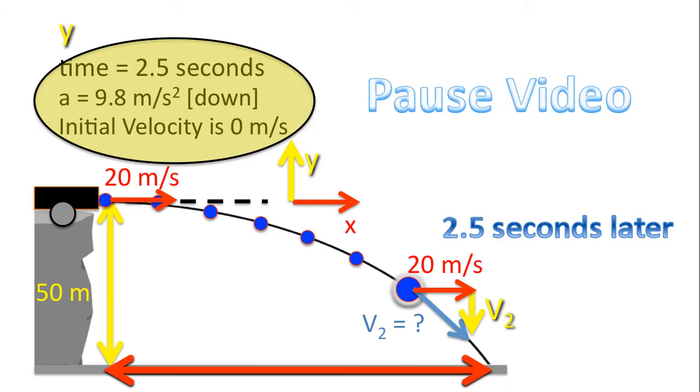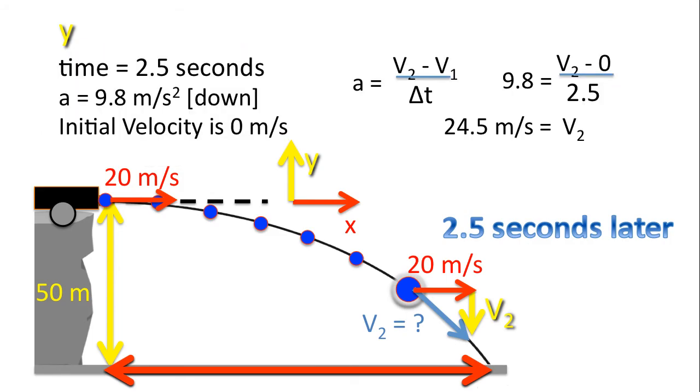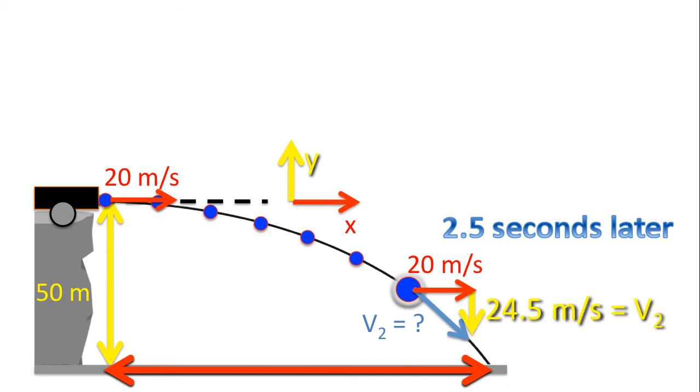Now I'd like you to use that information, pause the video, and solve for the final velocity. I hope you tried it. Here is the final velocity in the Y direction. And so substituting that number into our triangle. Now at this point, I leave it to you to use Pythagorean theorem. Our final velocity works out to 31.6 meters per second, or 30 meters per second when written to significant digits.